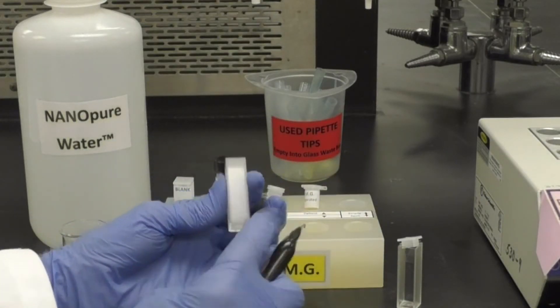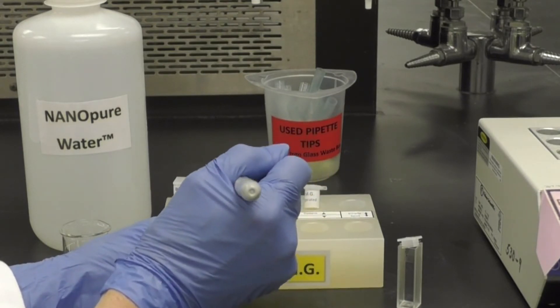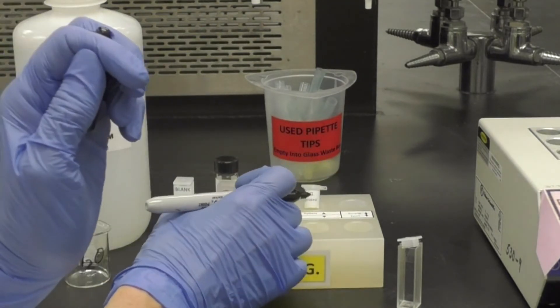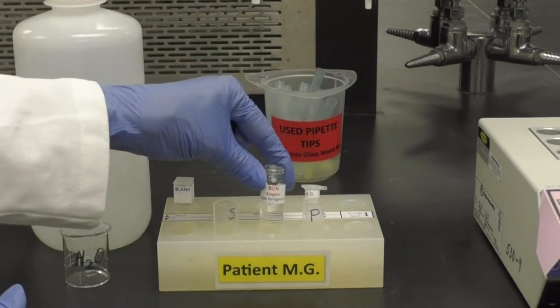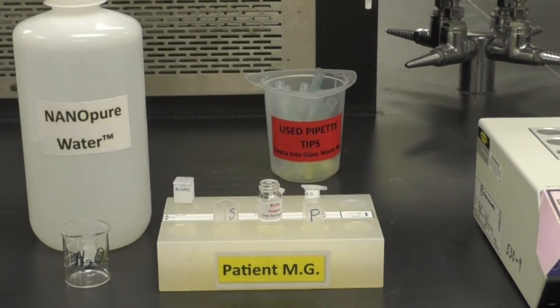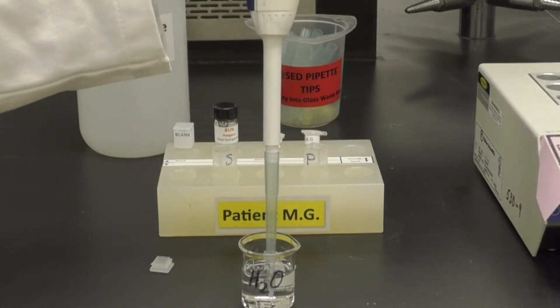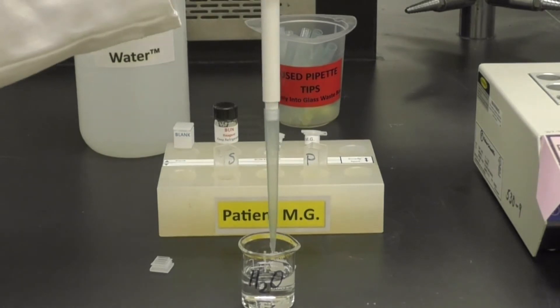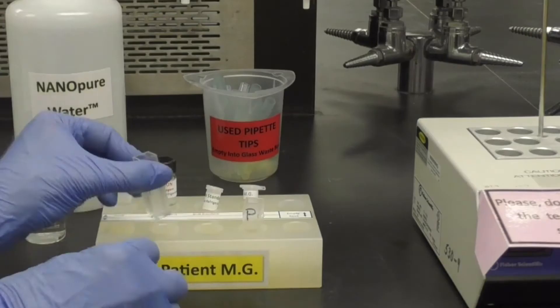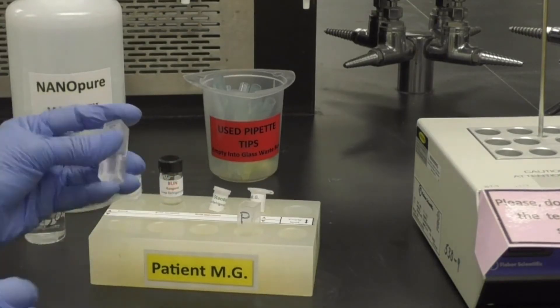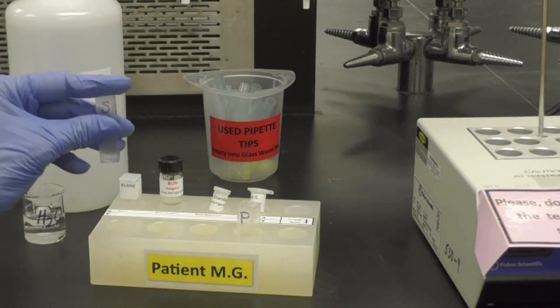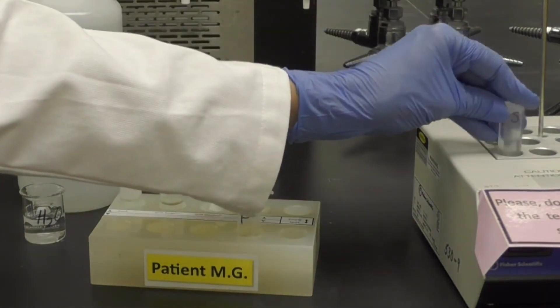Start by labeling the two cuvettes. Here we are using S to indicate the standard and P for patient. Next, pipet 1 milliliter, in other words 1,000 microliters, of the BUN reagent into each cuvette. Then add 1 milliliter of Nanopure water to each cuvette. Cap the standard cuvette, rotate to mix, and place it in the dry bath to warm for 5 minutes.